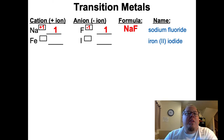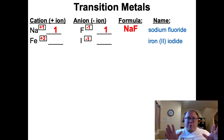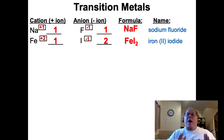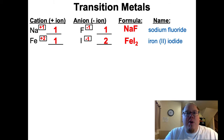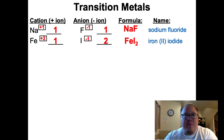When we get to the iron, since we don't know its charge just by looking at the periodic table, it's part of the name - right there, 2. So its charge is positive 2. The iodine is negative 1. With a positive 2 charge and negative 1 charge, it's a 1 to 2 ratio: one iron and two iodides. So FeI2 would be the formula of iron 2 iodide. Note: the 2 refers to the charge on the iron, not how many irons you have. It is not Fe2I - it is FeI2. Be careful of that.